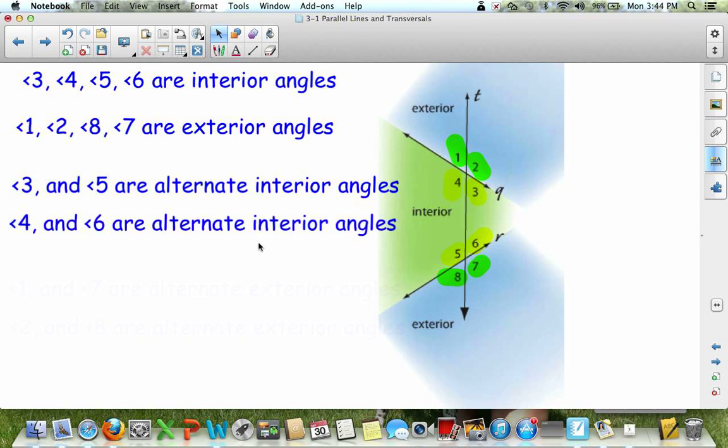The next one, angle 4 and angle 6, are also alternate interior angles to each other because they're on either side of the transversal, and they're on the inside.